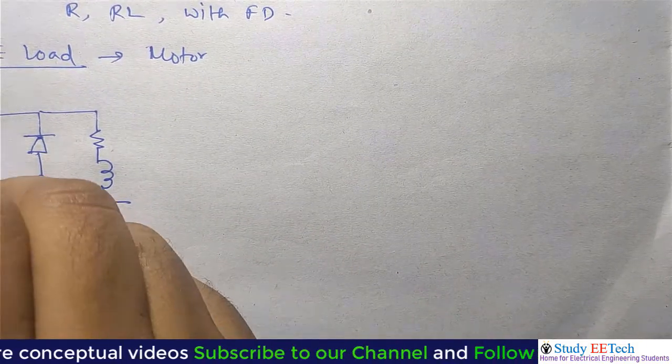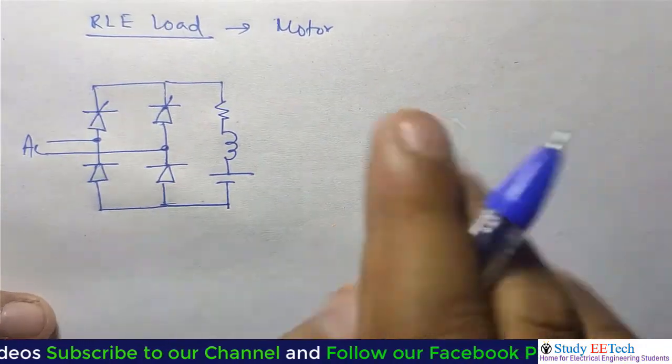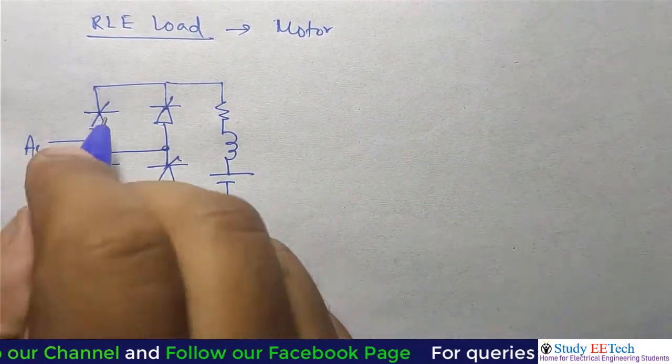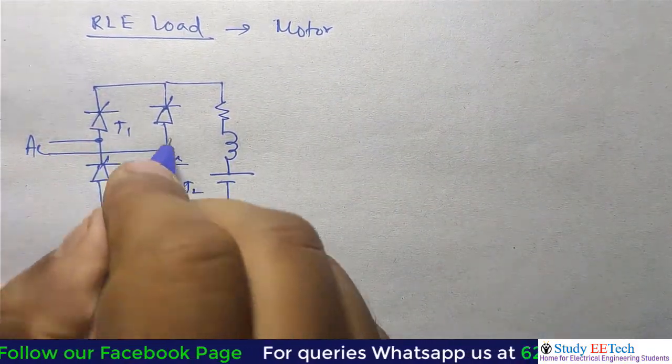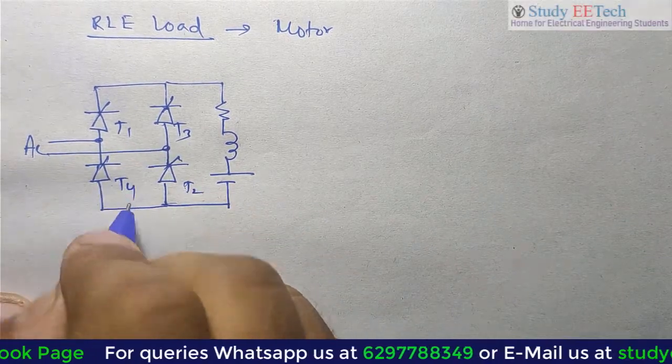Now we will understand. These are thyristors: T1, T2, T3, T4.